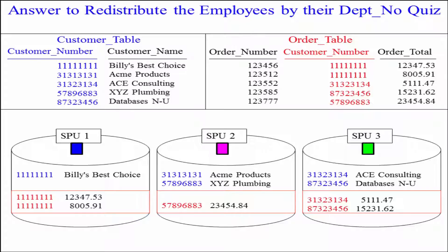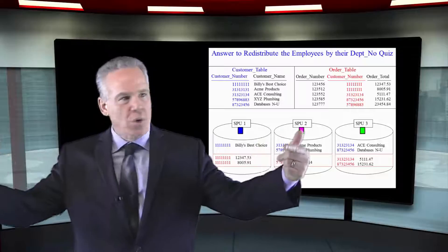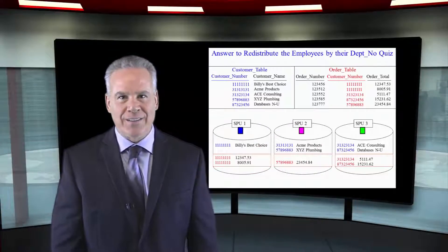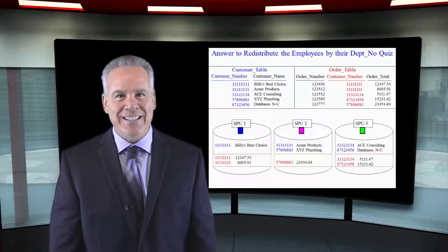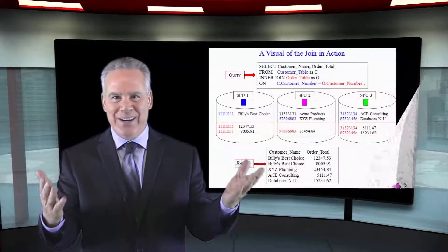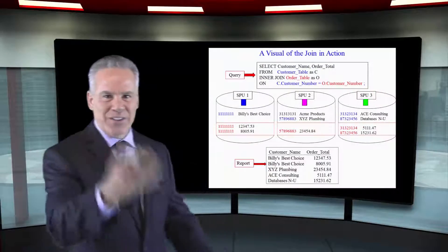You really need to get this down because that's the biggest misconception in all of computing that you can join two things from anywhere on the planet. That's just not the case. It's got to be in the same memory. Once the data is on the same SPU that has to be joined together, you're going to see your report.